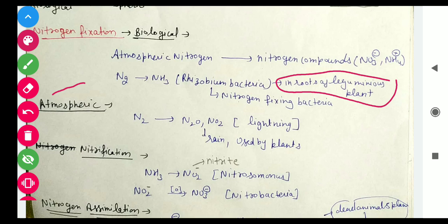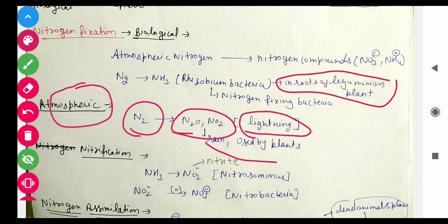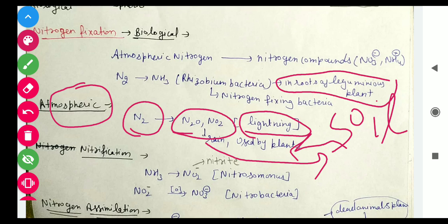In atmospheric nitrogen fixation, lightning provides the energy. When lightning occurs, nitrogen is heated up and gets energy from electricity, which converts it into oxides of nitrogen. Then, through rain, these come down to the soil, forming nitrogenous compounds in the soil. Then plants absorb them from the soil, and when we eat plants, we get that nitrogen into our bodies.